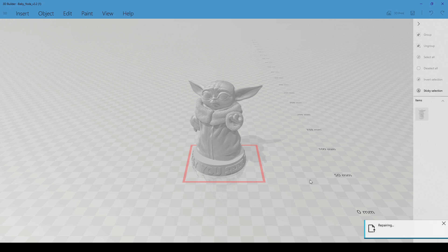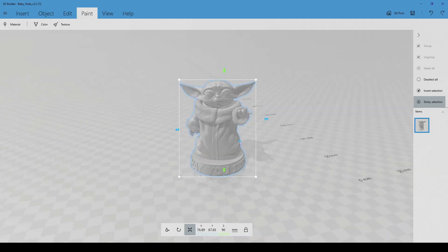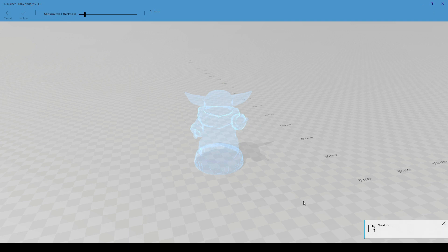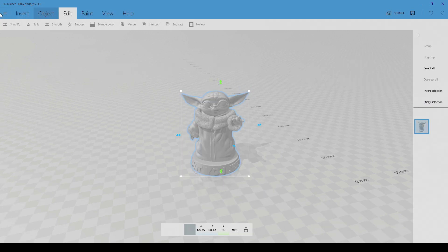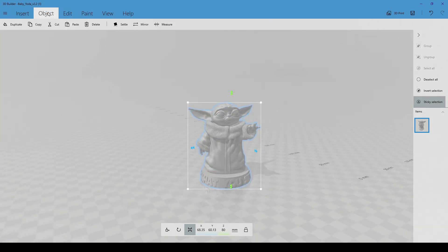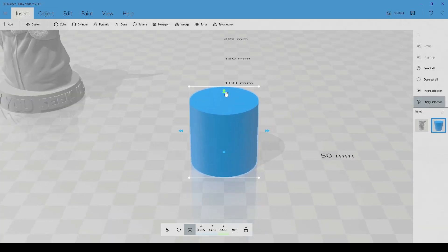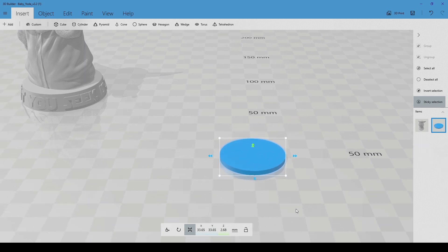You can hollow it in your slicer program of preference, or you can use Windows 3D Builder for that. Today, just to teach you a new trick, I'm going to use 3D Builder, but again, you can use ChituBox or Lychee Photo Workshop to hollow your model. And the good thing about 3D Builder is that you have two tools in one. You can check the integrity, and also you can hollow the model only in one place.